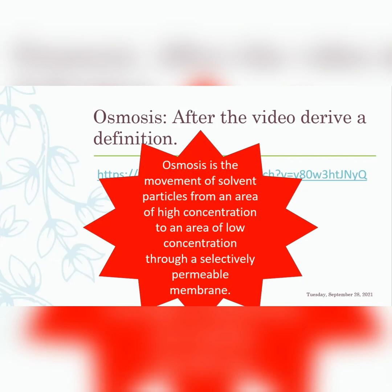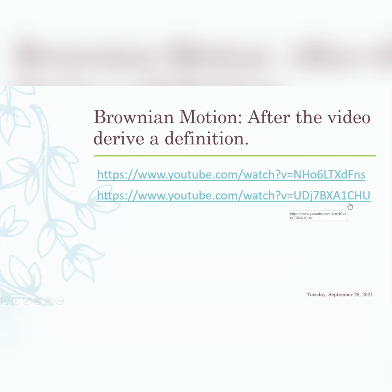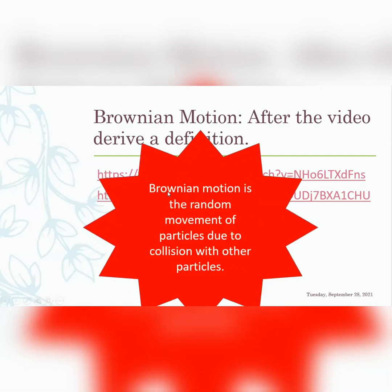Brownian motion was discovered by Robert Brown. It was first observed with pollen grains in water, which were constantly moving around — something mentioned in the video. Brownian motion is the random movement of particles due to collision or bombardment by other particles. The water molecules were bouncing against the pollen grains, causing them to move.